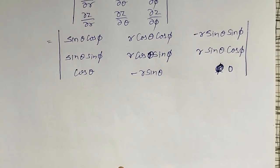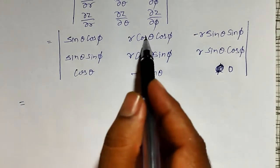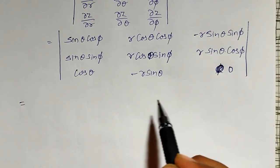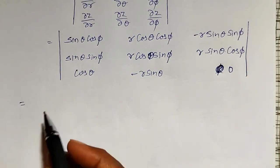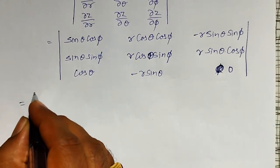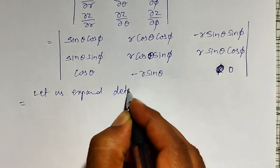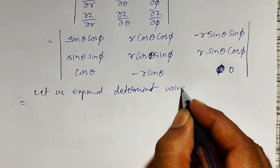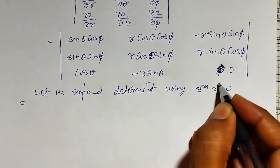I have to solve this determinant. I can use the properties of the determinant or solve it directly. Usually we expand using the first row, but instead let us expand this determinant along the third row, since the last element is zero — this will simplify the calculation.